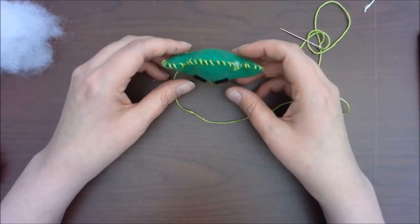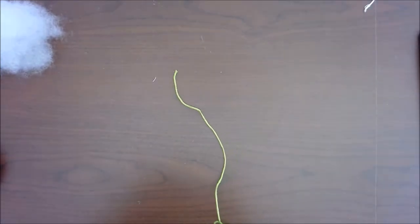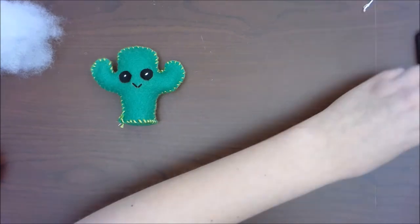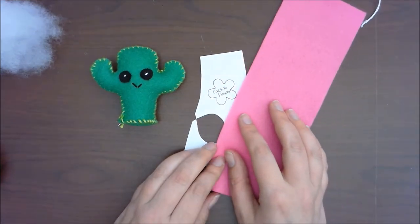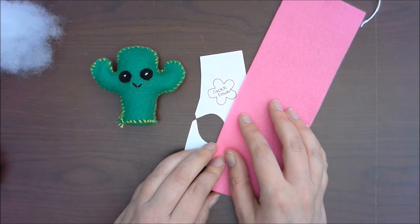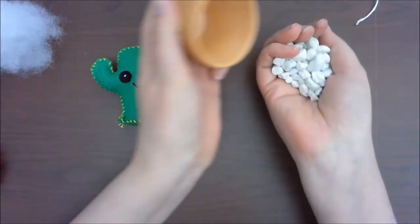And then see, he can stand up all on his own. And from here, you can take some of your pink felt and cut out your stencil for the flower and then just do a simple stitch and tie that flower right onto your cactus.